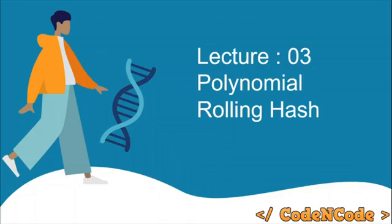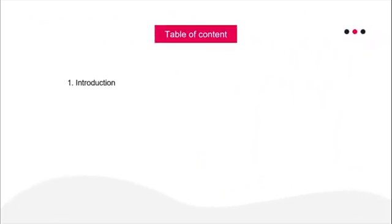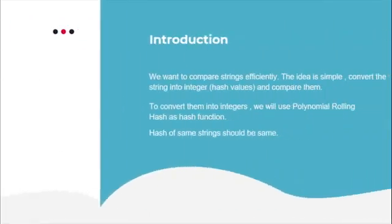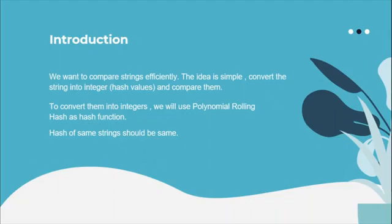Hello guys, this is Code In Code, and this is the third lecture of the string algorithm series. In this lecture we are going to study about polynomial rolling hashes. Our primary goal is to compare two strings of length n for equality efficiently. We will convert both strings, calculate their hash values, and then compare those hash values.